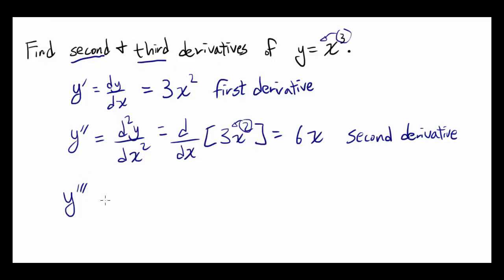Now let's think about what the third derivative, or y triple prime, is equal to. It's also written as the third derivative of y with respect to x. Obviously, now I hope you get the pattern. It's the derivative with respect to x of the second derivative, or 6x, which in this case is 6. That's going to be the third derivative.